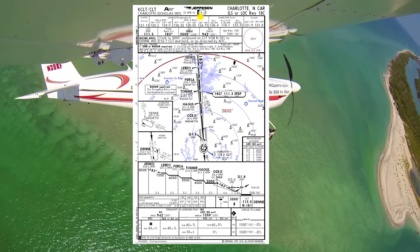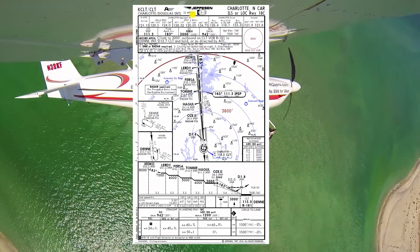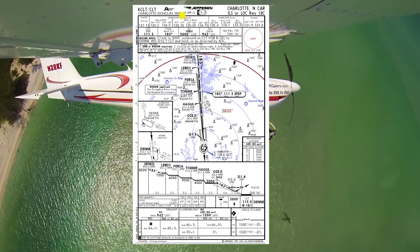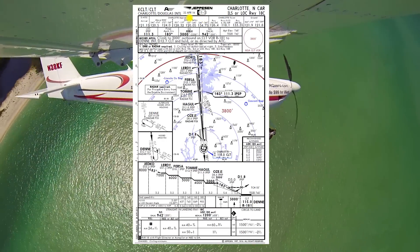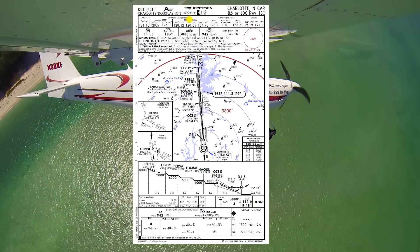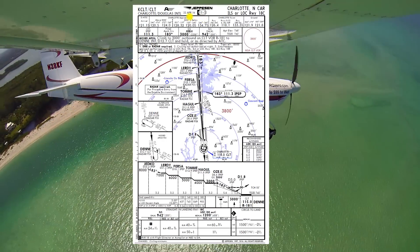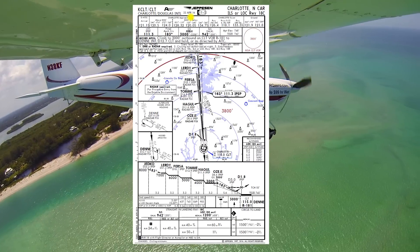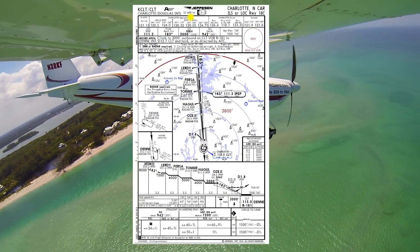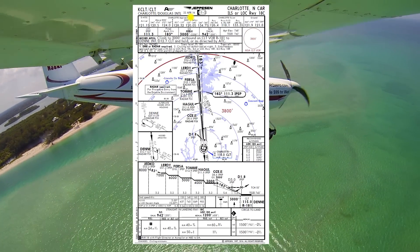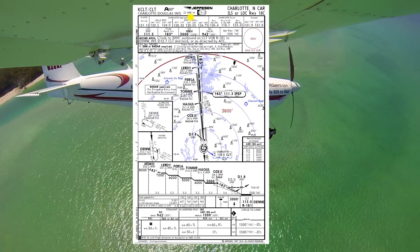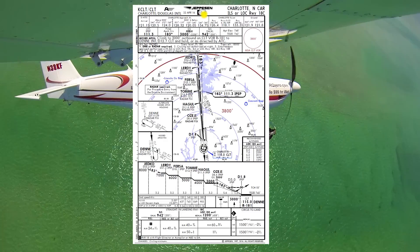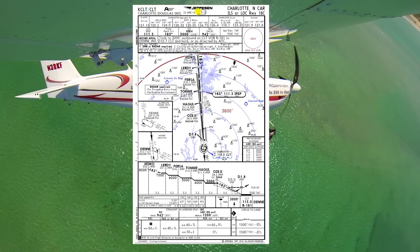Next, page 11-3, 22nd of April, 2016. We're checking the page number and the last amendment date, and that's just in case you have another person in the airplane with you that's also looking at the approach. You want to verify that you're both looking at the same thing and that both your plates are current.